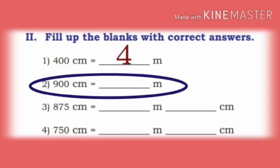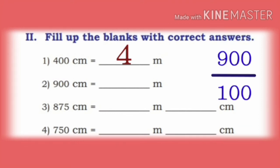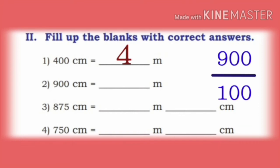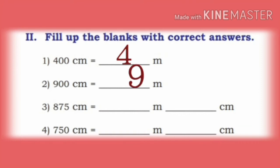Now, second one: 900 centimeter. We divide 900 by 100. Cancel the zeros on numerator and denominator. So, we get the answer as 9 meter. Let us fill 9 meter.